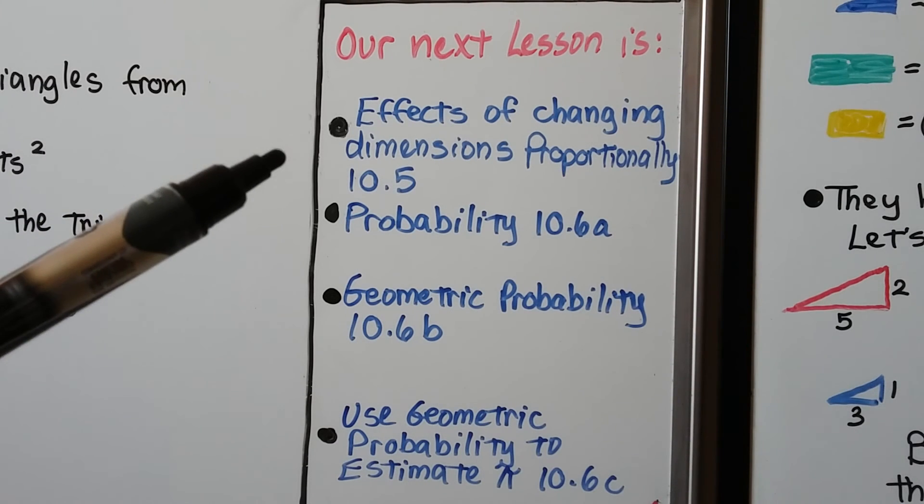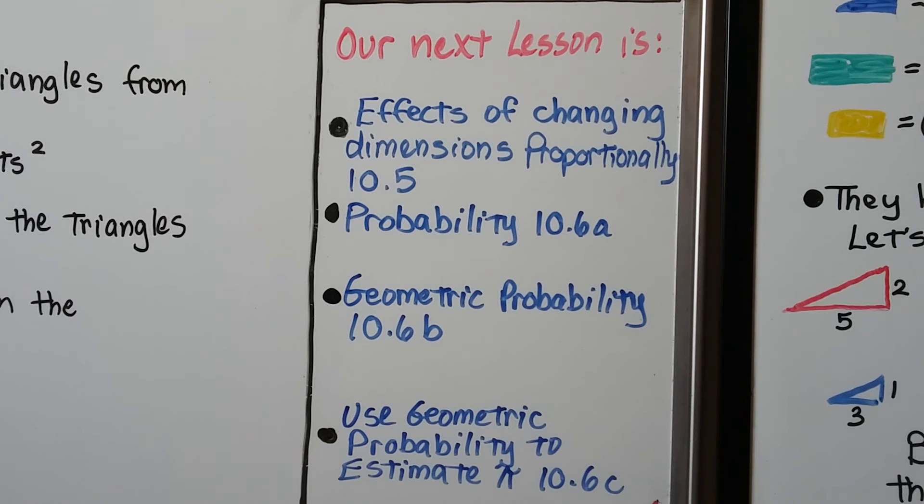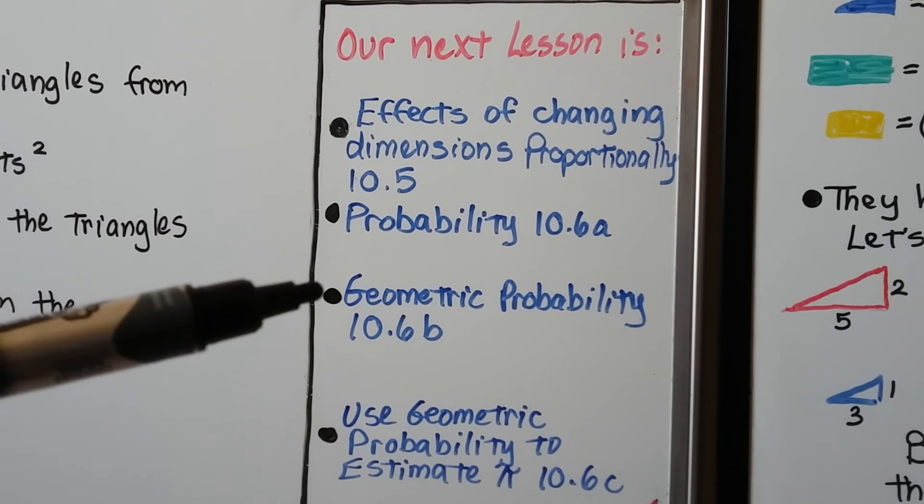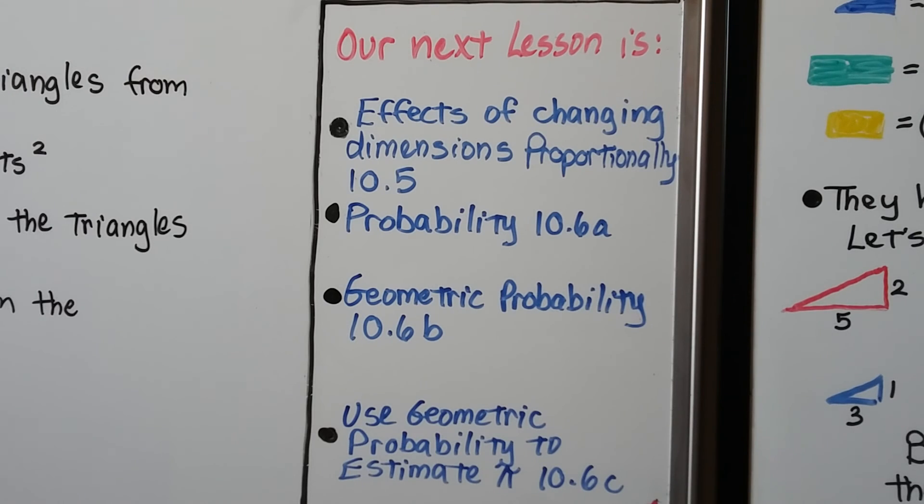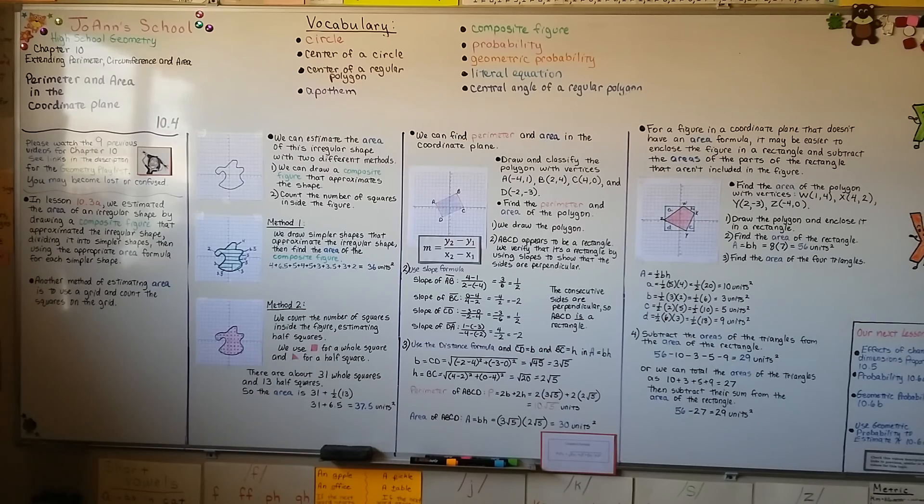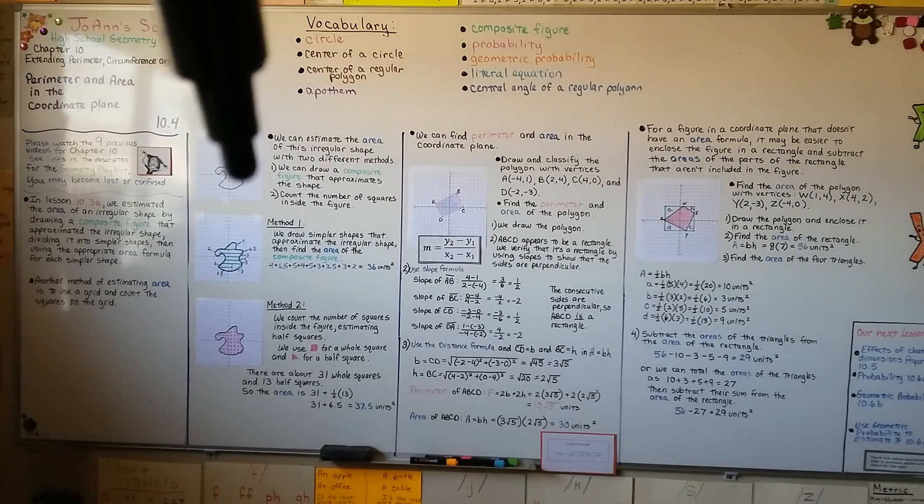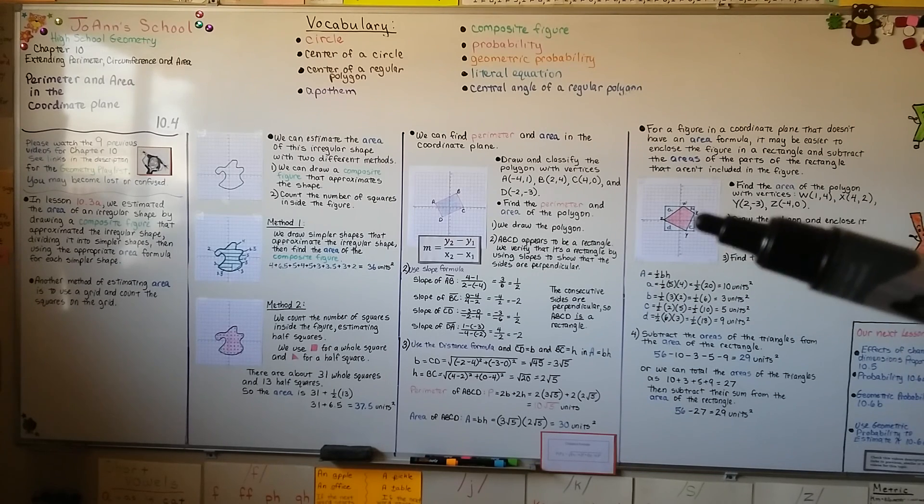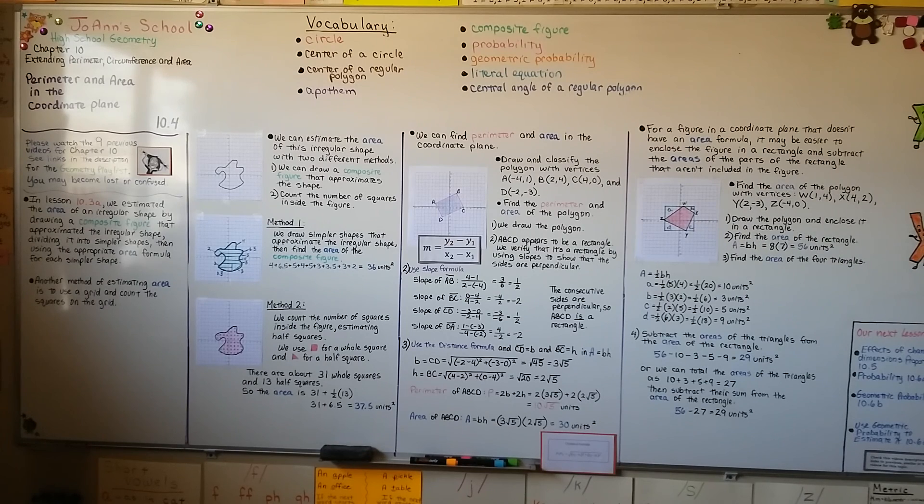Our next lesson is going to be 10.5, and we're going to talk about the effects of changing dimensions proportionally before we move on to the three parts of 10.6. The first part is about probability. Then we're going to talk geometric probability. Then we're going to use geometric probability to estimate pi. So now you know the two methods to estimate area, right here. You also know that you can use a slope formula and distance formula to help find the perimeter and area in a coordinate plane. You also know from here that we can draw a rectangle around a figure to find its area. You also know the missing square puzzle answer, don't you? The slopes were different. They weren't really triangles. It's an optical illusion. I hope you're having a great day, and I'll see you next time.